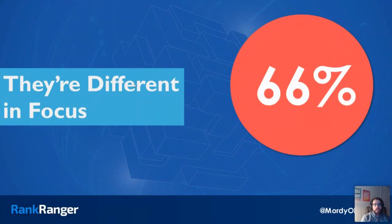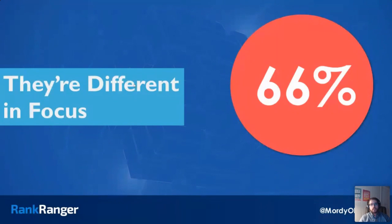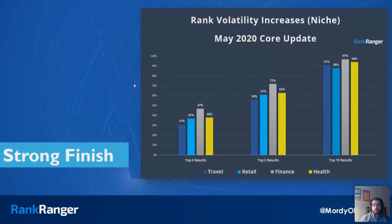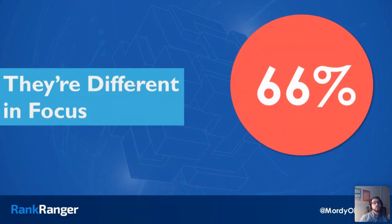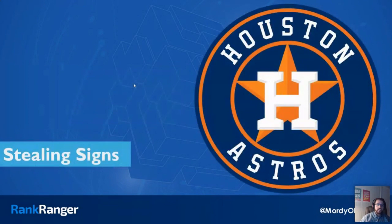Going back to how the core updates differ from unconfirmed updates — they have a specific focus. The core updates generally hit YMYL harder than unconfirmed updates. In fact, the YMYL niches — health, finance — see 66% more volatility during a core update than the non-YMYL niches. However, this particular update is unique in that YMYL and non-YMYL are all basically in the same volatility range.